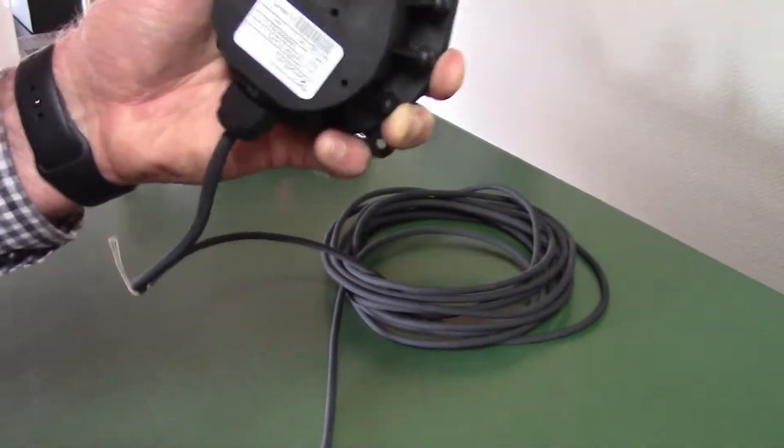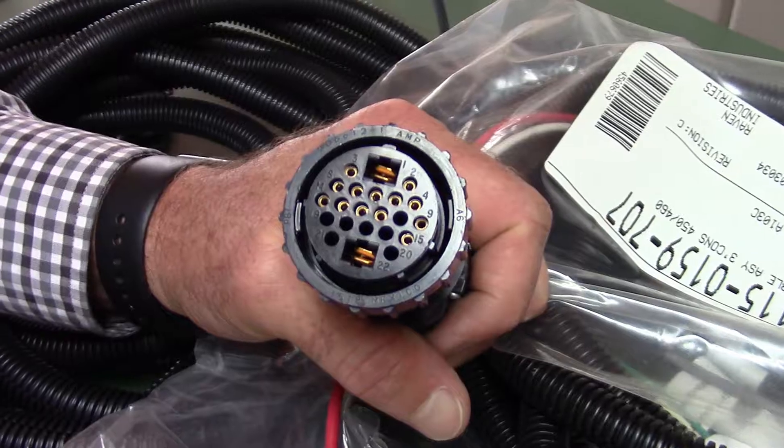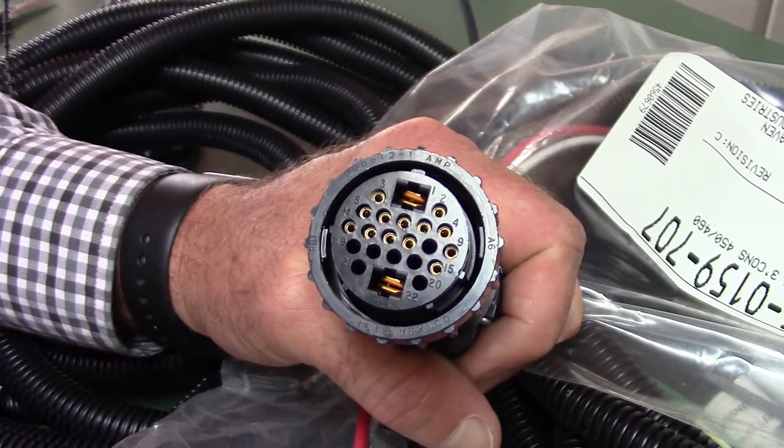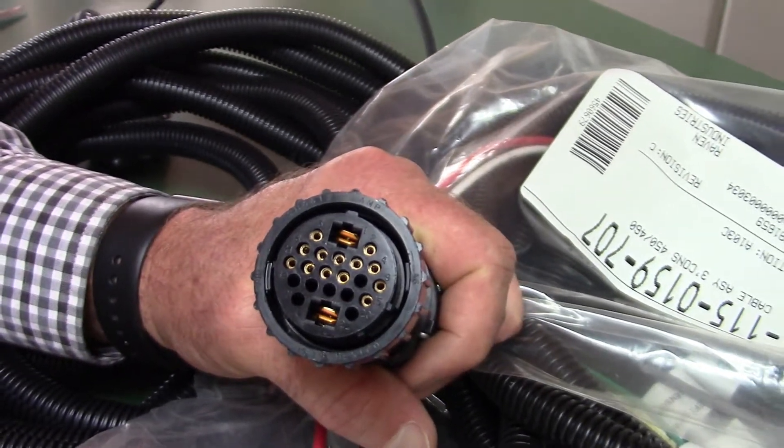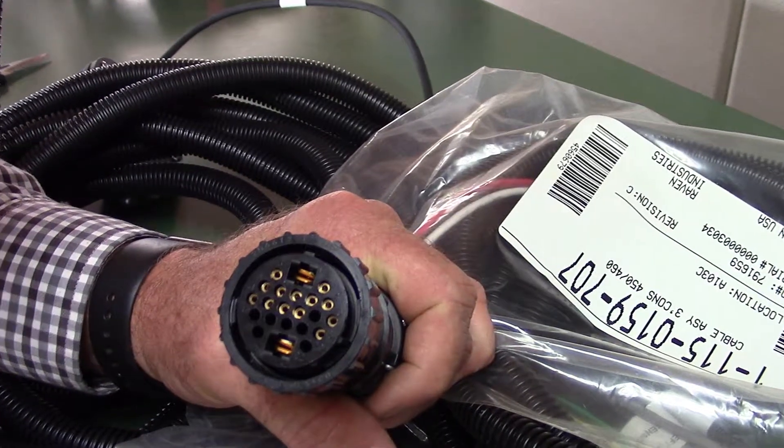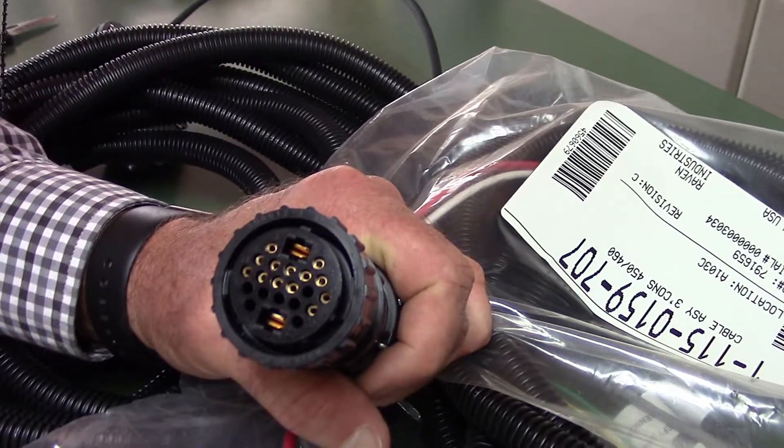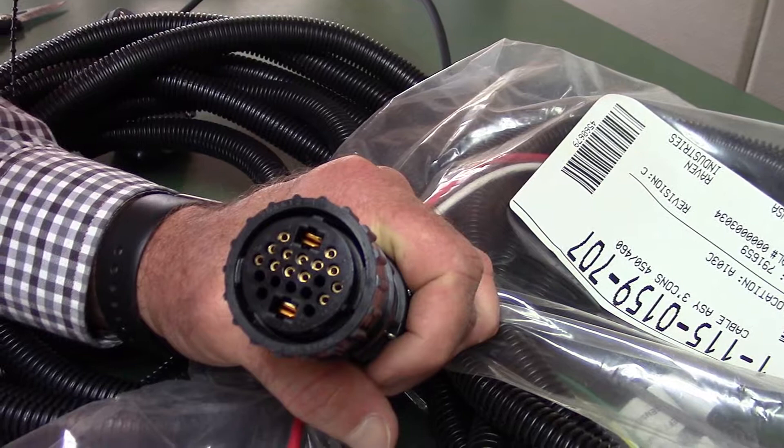We're continuing troubleshooting the encoder and we've troubleshot the encoder and the connection to the flow cable to the encoder and we still don't have the correct voltage.